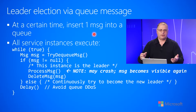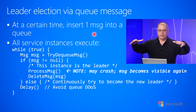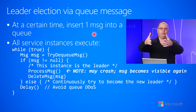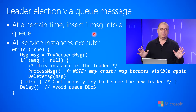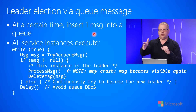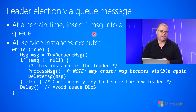In this scenario, let's say we have 10 instances of our service running and they're constantly going to a queue and asking, do I have work to do? The queue is completely empty, so the queue is returning no — there's no work to be done.